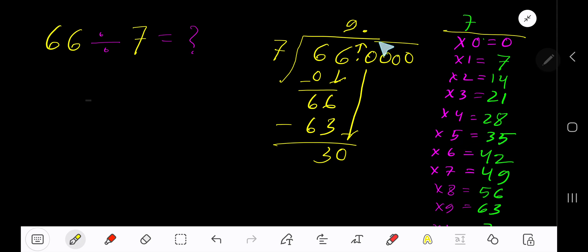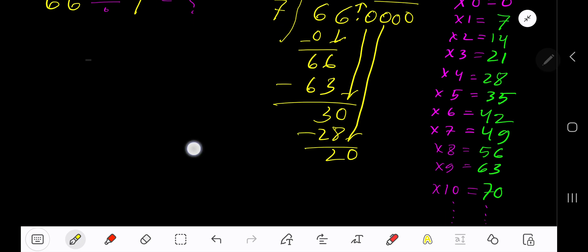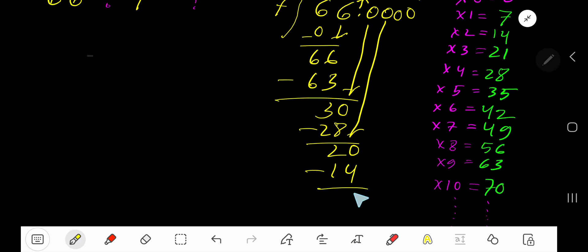Subtract 2. Bring down another 0. 7 goes into 20 how many times? 3 times would be 21, which is too big, so 2 times. 2 times 7 is 14. Subtract.